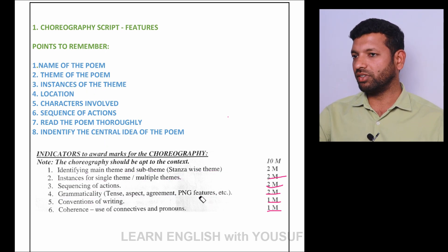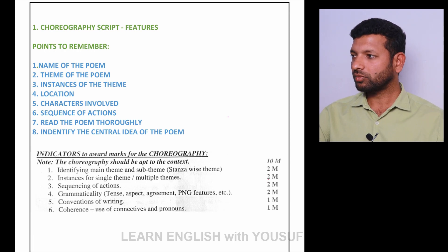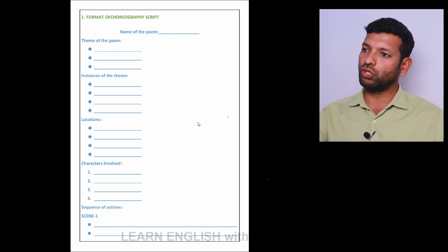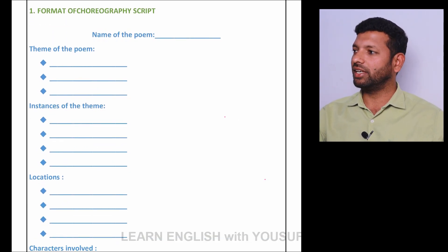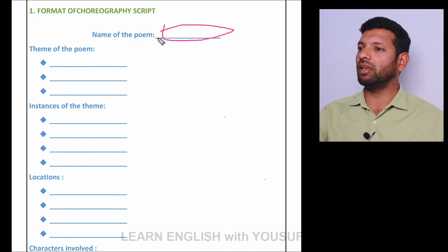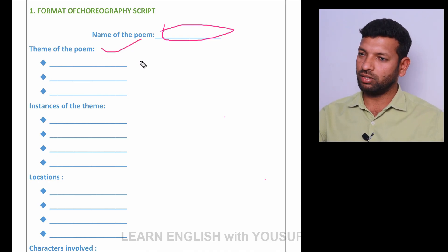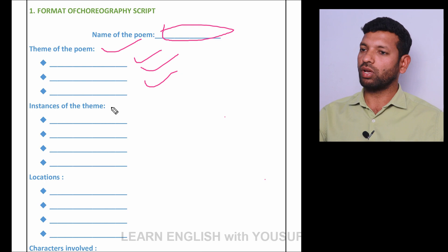So you need to be very careful when you write all the discourses, especially the choreographic script, which students really feel difficult doing. Now let us go to the next page. I am going to show you how this choreography script format is designed. First, you need to write the name of the poem — put a heading for that. Second, the theme of the poem: the centered themes of the poem that you need to write — one, two, or three, however many are available. At least write one or two.